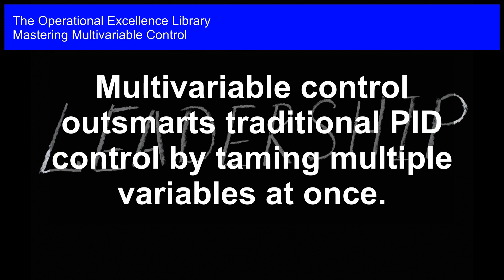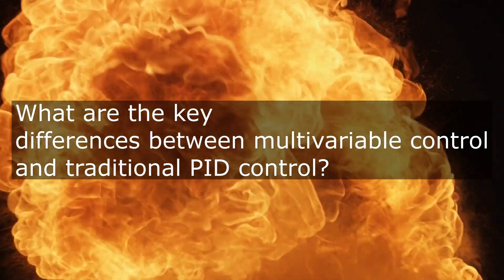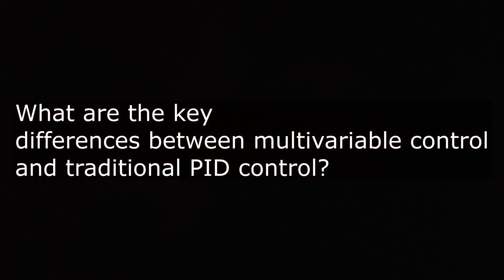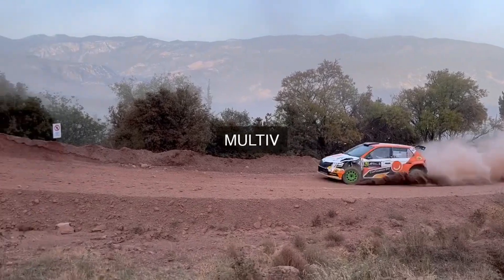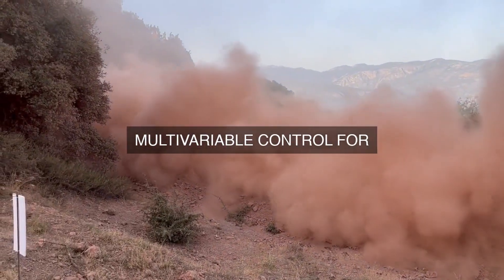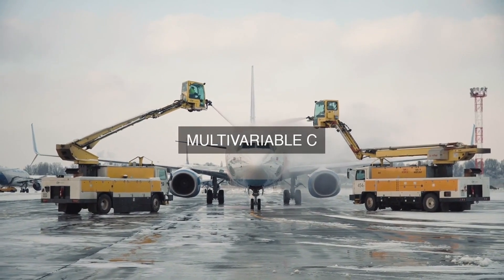Mastering Multivariable Control. Multivariable control outsmarts traditional PID control by taming multiple variables at once. What fundamental distinctions can be identified between multivariable control, which involves the simultaneous regulation of multiple process variables, and traditional PID control, which focuses on the separate regulation of individual process variables?